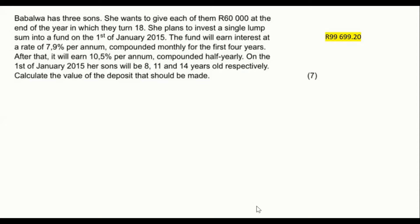Seven marks — that's quite decent. So here we've got someone, Babalwa, who has three sons. She would like to give each of them 60,000 Rand at the end of the year in which they turn 18. That's a lovely mom — I would love to have gotten 60,000 Rand when I turned 18.